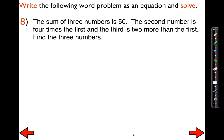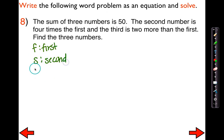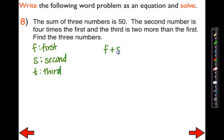Number eight: the sum of three numbers is 50. The second number is four times the first, and the third is two more than the first. This one's a little trickier because there are three numbers involved. I'm going to pick these variables: F for the first, S for the second, and T for the third. With a T, put a hook at the end so it doesn't look like a plus sign. The sum of these three numbers is 50, so the first plus second plus third should equal 50.